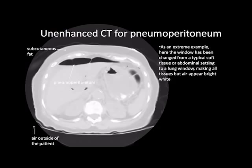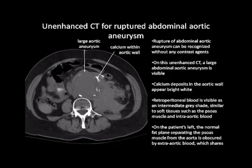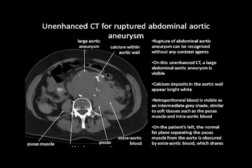Rupture of abdominal aortic aneurysm can be recognized without any contrast agents. On this unenhanced CT, a large abdominal aortic aneurysm is visible. Calcium deposits in the aortic wall appear bright white. Retroperitoneal blood is visible as an intermediate gray shade, similar to soft tissues such as the psoas muscle and intra-aortic blood. On the patient's left, the normal fat plane separating the psoas muscle from the aorta is obscured by extra-aortic blood. Compare with the normal psoas muscle and fat plane on the patient's right-hand side, where fat normally separates the psoas muscle and aorta.